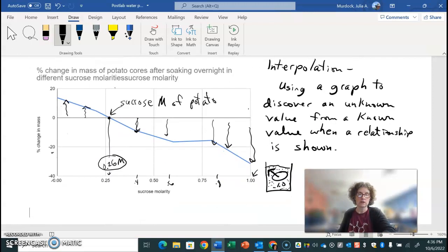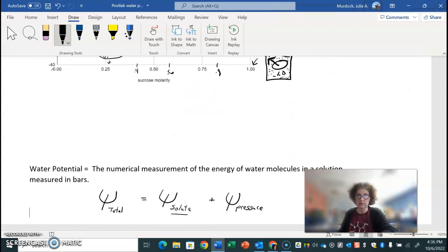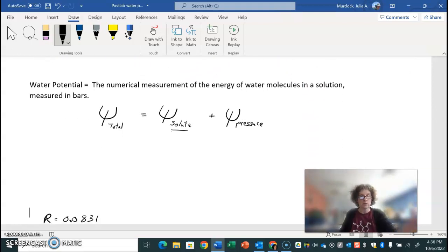So now let's go down and talk about water potential, because that's the other thing that I wanted you to get out of this. So water potential is the numerical measurement of the energy of water molecules in a solution measured in pressure bars. So we say that the total potential of water, remember that Mr. Anderson talked about Poseidon and his pitchfork. Well, there's the symbol for water potential. The total water potential of water in a solution is going to be equal to the sum of two things: the water potential as affected by the solutes in the water, like the sucrose that we put in, and the water potential as affected by any pressure on that system.